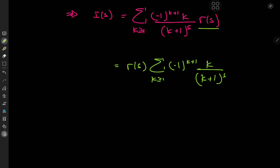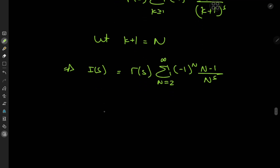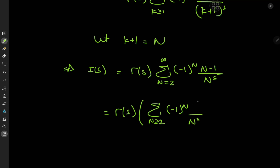Since Gamma(s) is independent of the index variable we can factor it out. Now for a modification to the index variable: let k plus 1 equal n. Then I(s) can be written as Gamma(s) times the sum over n starting at n equals 2 — since k equals 1 gives n equals 2 — of negative 1 to the n times n minus 1 divided by n to the s. Using the linearity of the summation operator, this becomes Gamma(s) times the sum over n of negative 1 to the n times n divided by n to the s, which is 1 over n to the s minus 1, minus the sum over n of negative 1 to the n divided by n to the s.